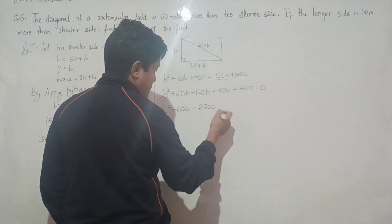Let us write this equation: b squared plus 120b plus 3600 equals b squared plus 60b plus 900. Bringing terms to one side: b squared plus 60b minus 120b plus 900 minus 3600 equals 0. This gives b squared minus 60b minus 2700 equals 0.